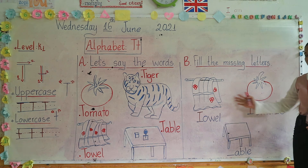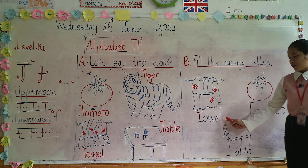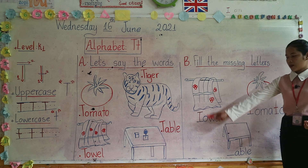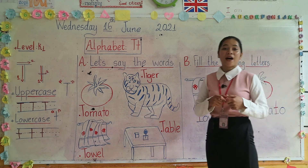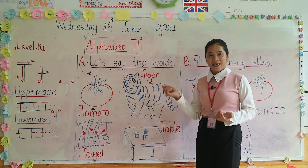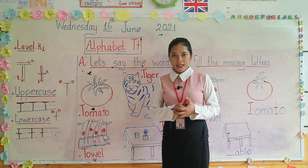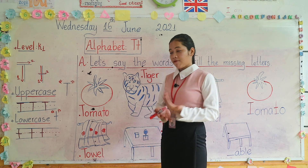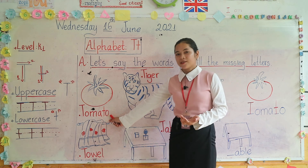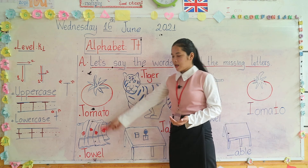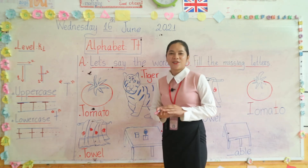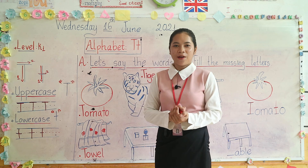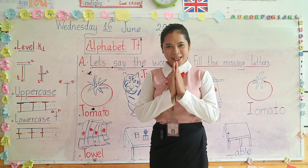So the last one — can you do it by yourself at home? Okay. And now let's say the words again. We have towel and tomato. Again — towel, tomato. Last time — towel, tomato. Great job class. So today we studied about alphabet T, and the alphabet T the sound is T. And we have tomato, tiger, towel, and table. Great job class. So thank you very much for joining this video. Hope everyone is well and see you next time. Thank you again, bye-bye!